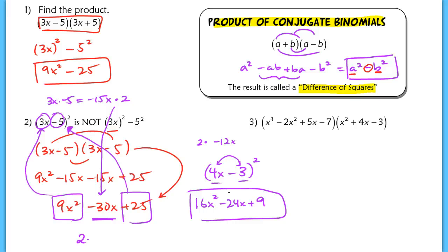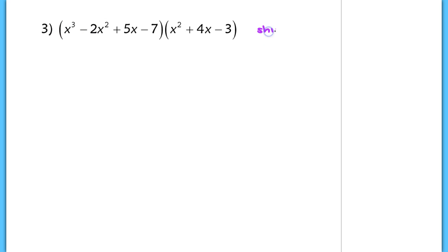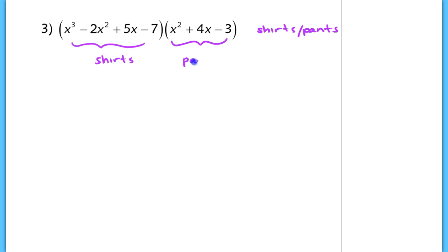Being able to do these quickly will save you a lot of time. Next, in problem 3, we have a pretty large polynomial with four different terms being multiplied by a trinomial with three terms. There's no shortcut here — we have to do everything by hand. Because it can be confusing which terms to multiply, I like to call these the shirts-pants problems. Think of this polynomial as all the shirts in your closet, and this polynomial as all the pants.